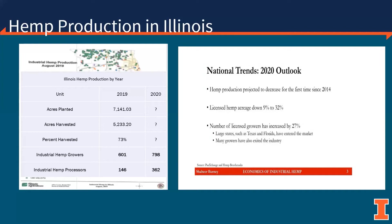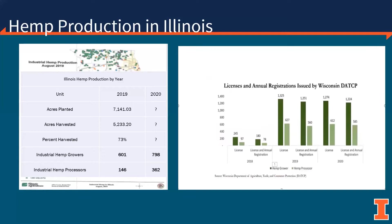These trends are no different than those seen across the country according to pan exchange and hemp benchmarks. If we look at the numbers out of Wisconsin in 2019 and 2020 — their second and third year of production respectively — the numbers of growers and processors held steady from 2019 to 2020.